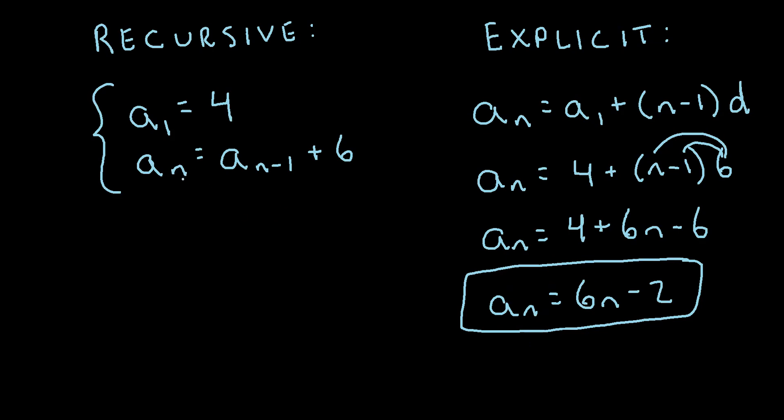With a recursive formula, if you wanted to find the fifth term, you would have to know the n-1 or fourth term and then add 6 to that. That's why it's called a recursive formula. You have to recursively know each previous value to find the next value. That's how you can convert a recursive formula to an explicit formula.